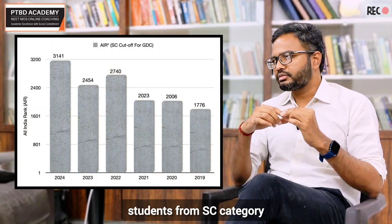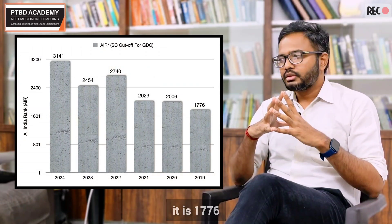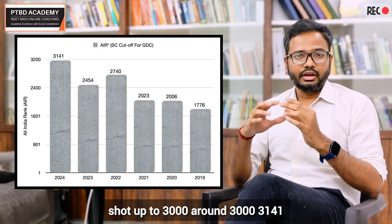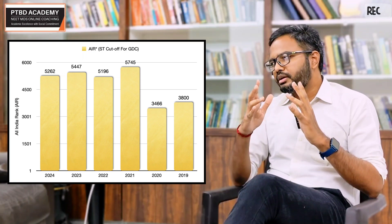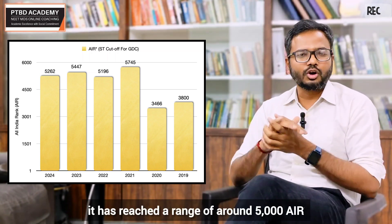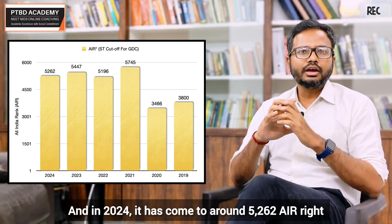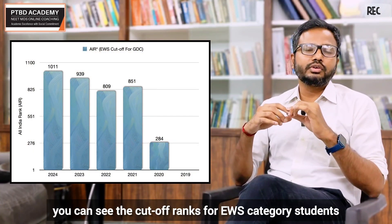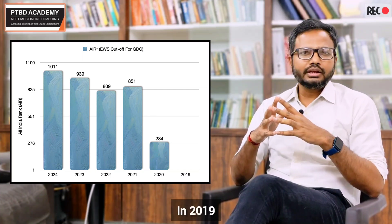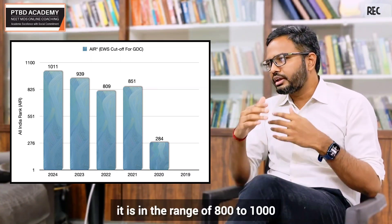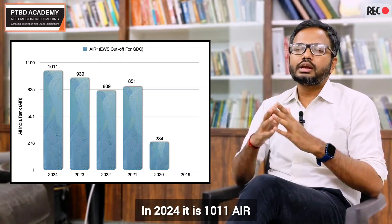For SC students, in 2019 the cutoff is 1,776, then in the range of 2,000 for a few years, and in 2024 it shot up to around 3,141. For ST students it is in the range of 3,500 plus in 2019 and 2020, reaching around 5,000 in the last three to four years, and in 2024 it is around 5,262. For EWS category, 2019 data was unavailable, 2020 it is around 284, and from 2021 to 2024 it ranges from 800 to 1,000, with 2024 at 1,011.